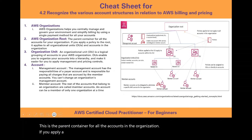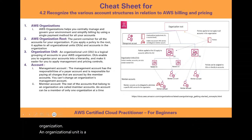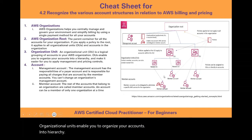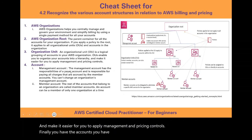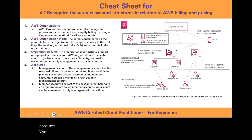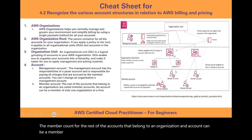An organizational unit (OU) is a logical grouping of accounts in your AWS organization, enabling you to organize accounts into a hierarchy and more easily apply management and pricing controls. The management account acts as the payer account and is responsible for paying all charges accrued by member accounts — you cannot change an organization's management account. Member accounts are all other accounts in the organization, and an account can belong to only one organization at a time.